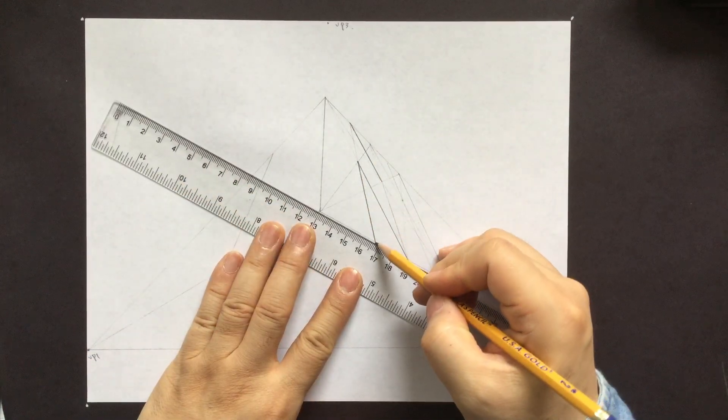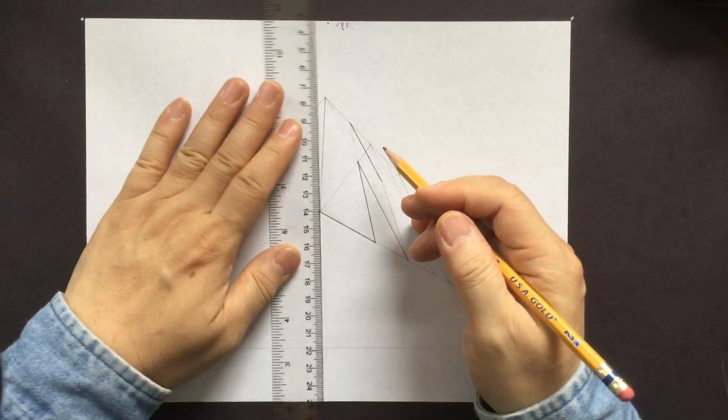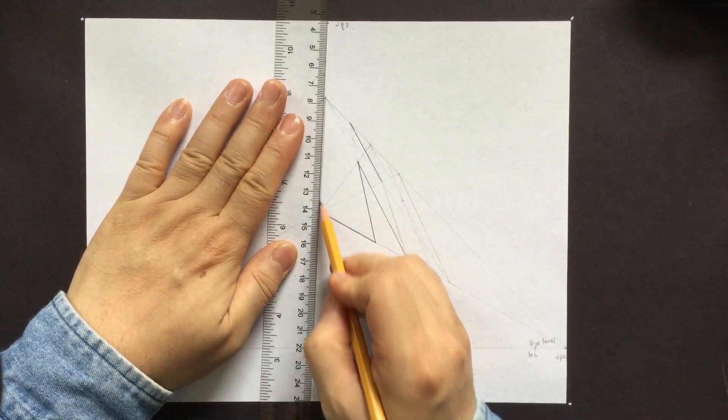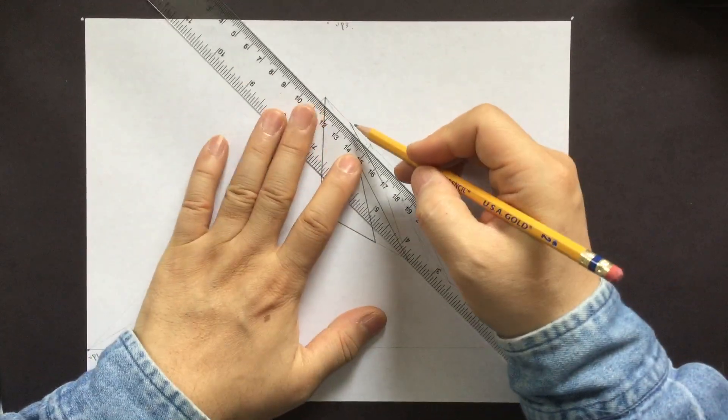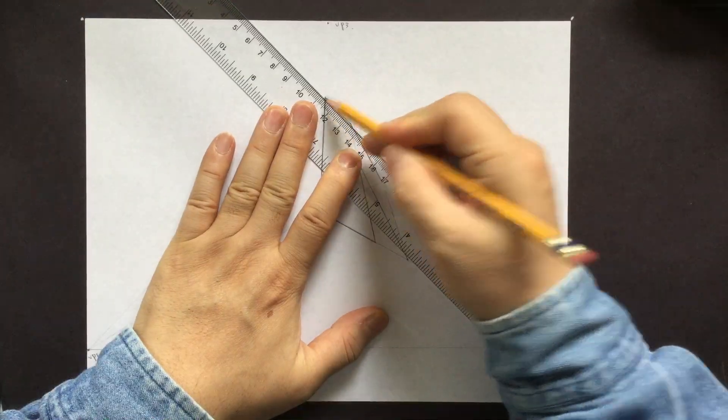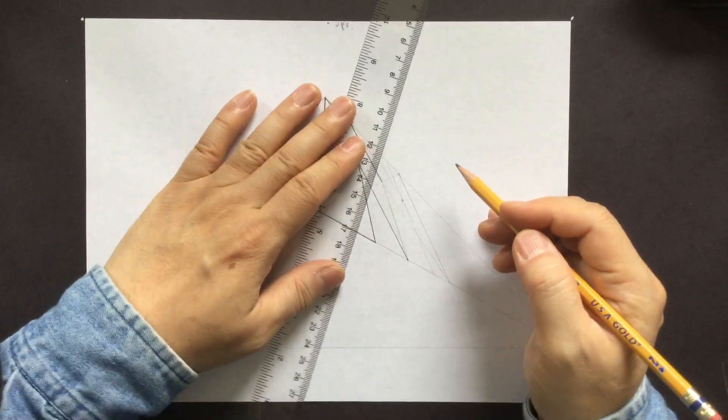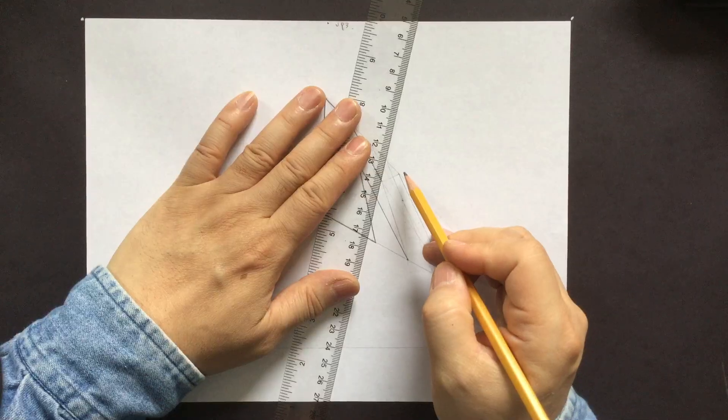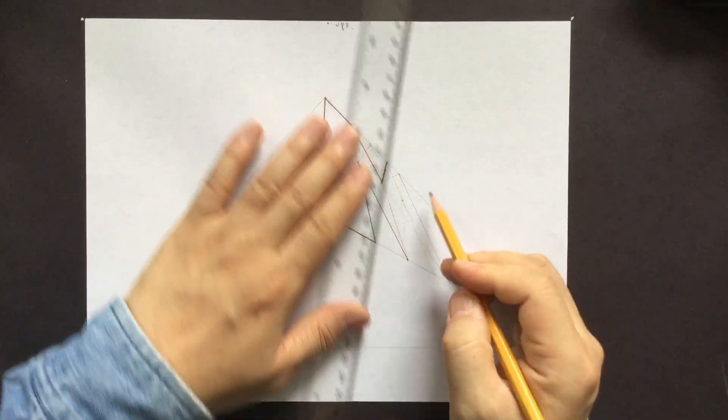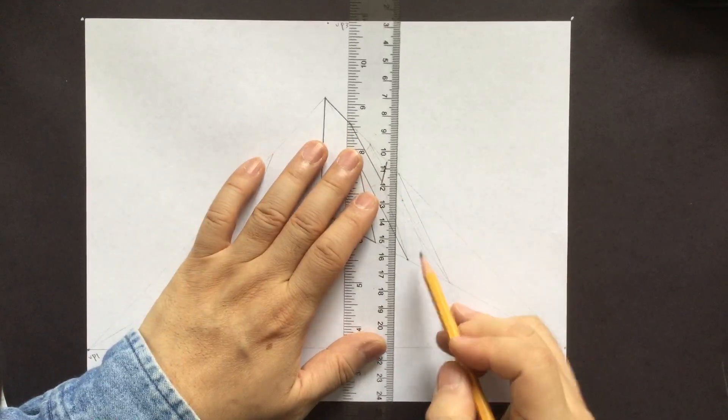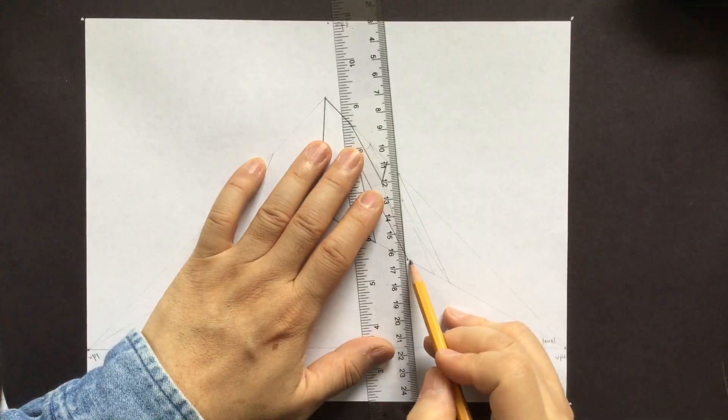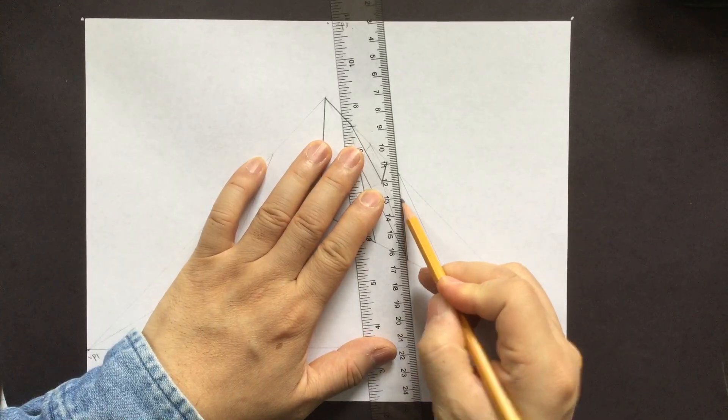So often, when you first learn a three-point perspective, because this is really dramatic, some people think, oh, I made a mistake. It's not correct. You probably feel that way when you're looking at this.